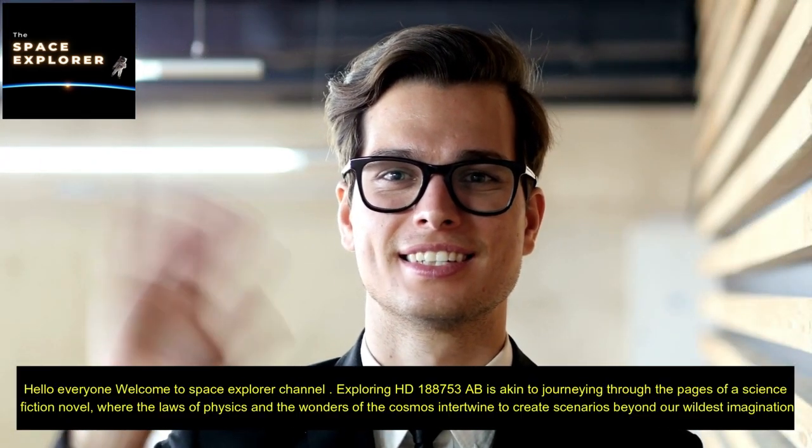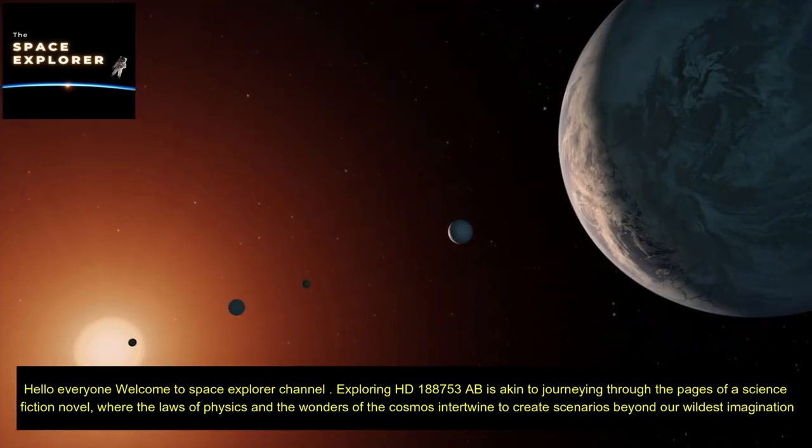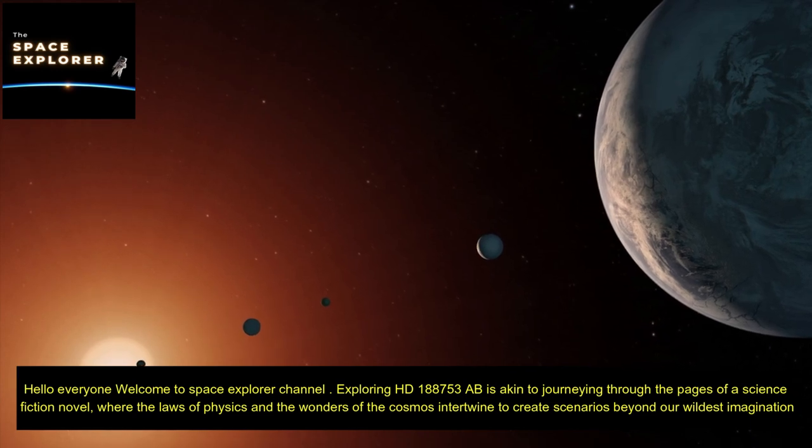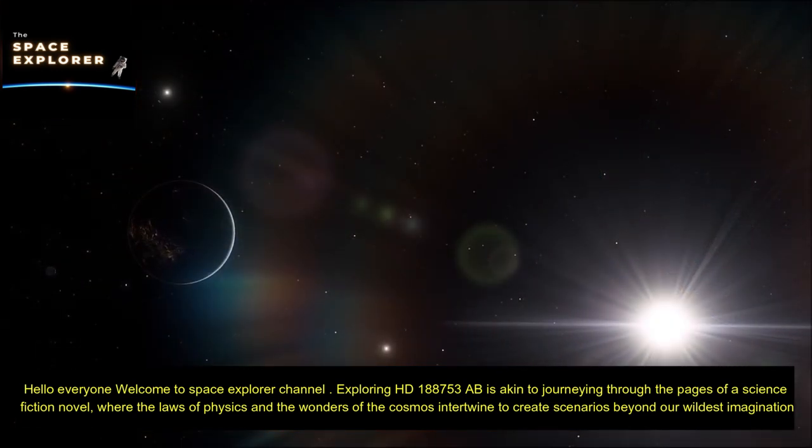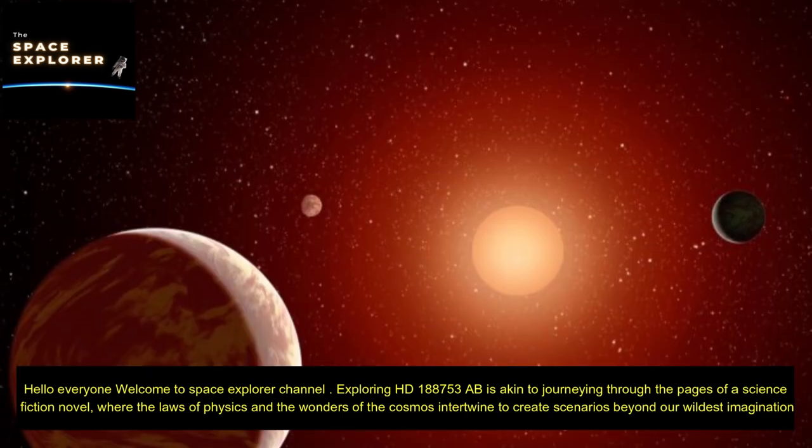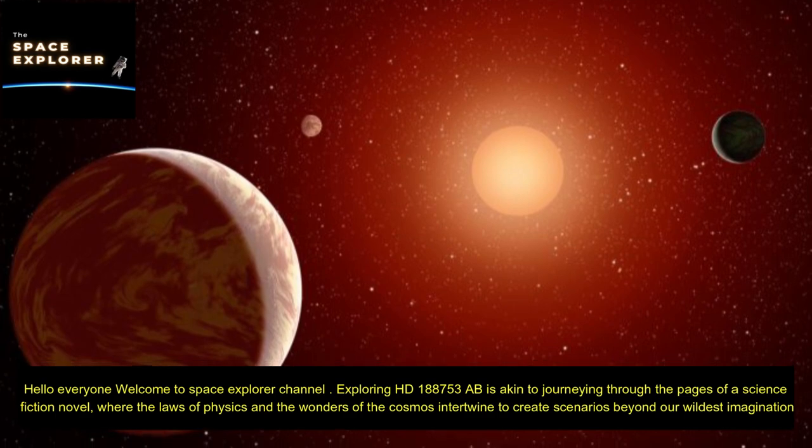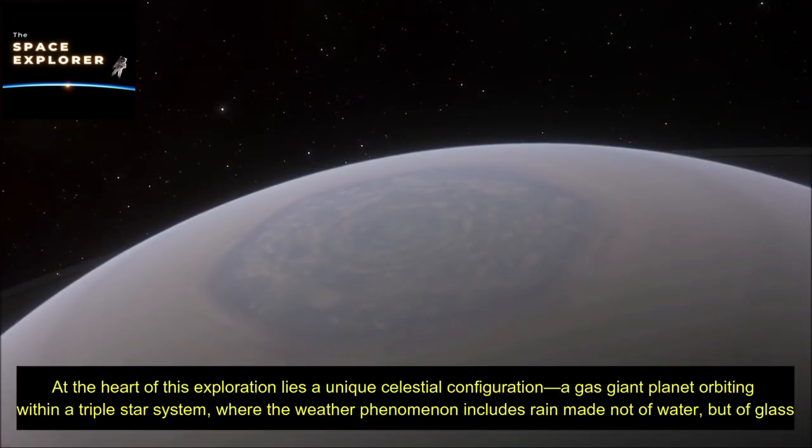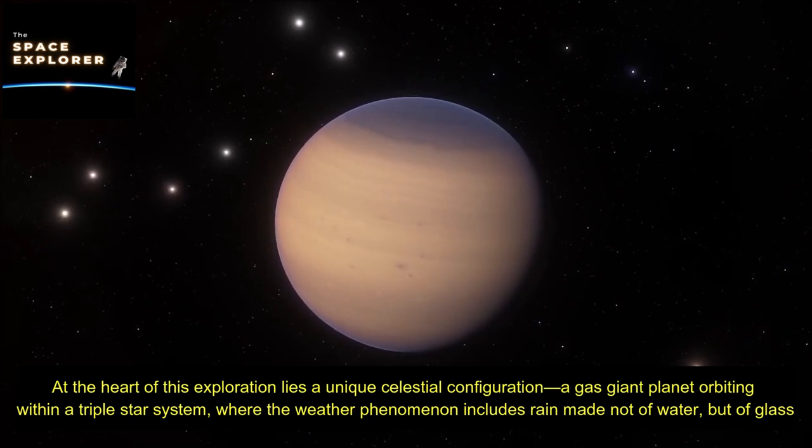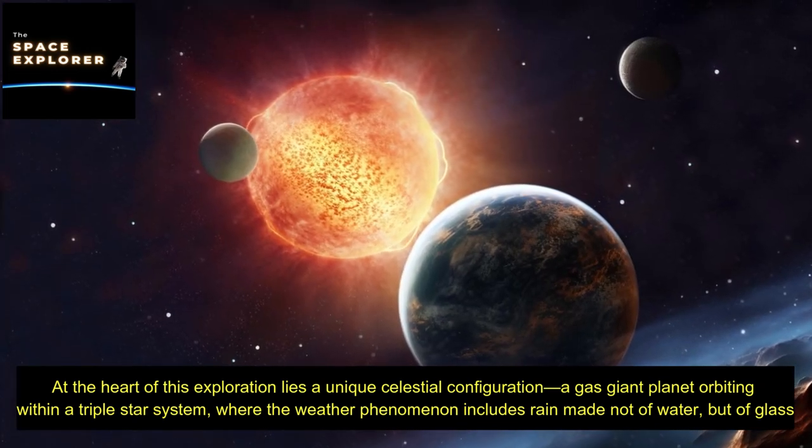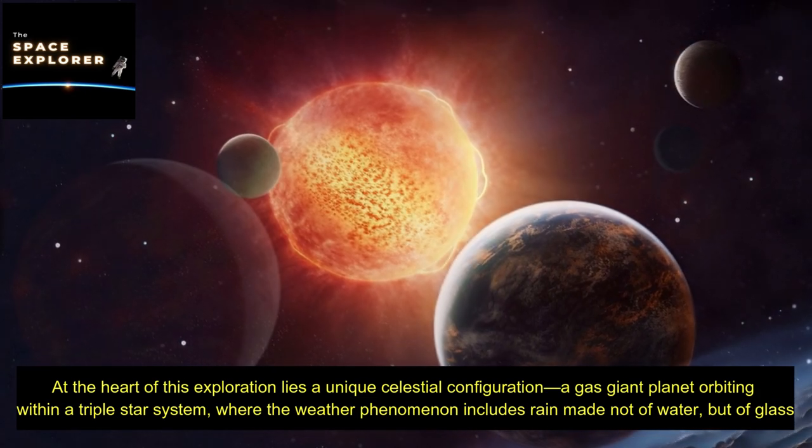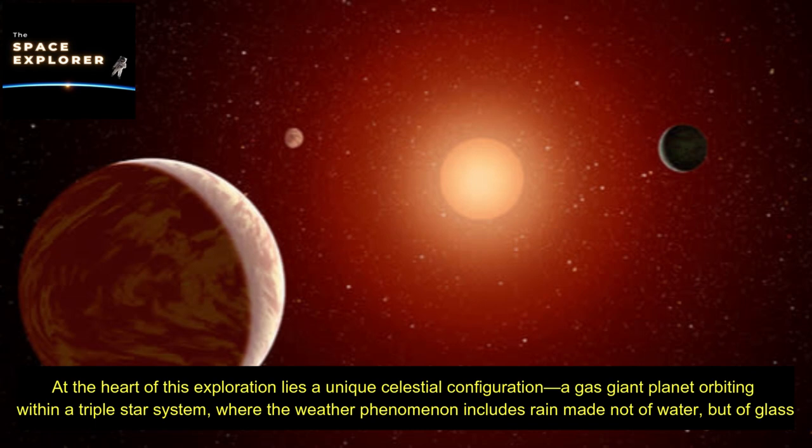Hello everyone, welcome to Space Explorer Channel. Exploring HD 188,753 AB is akin to journeying through the pages of a science fiction novel, where the laws of physics and the wonders of the cosmos intertwine to create scenarios beyond our wildest imagination. At the heart of this exploration lies a unique celestial configuration, a gas giant planet orbiting within a triple star system, where the weather phenomenon includes rain made not of water, but of glass.